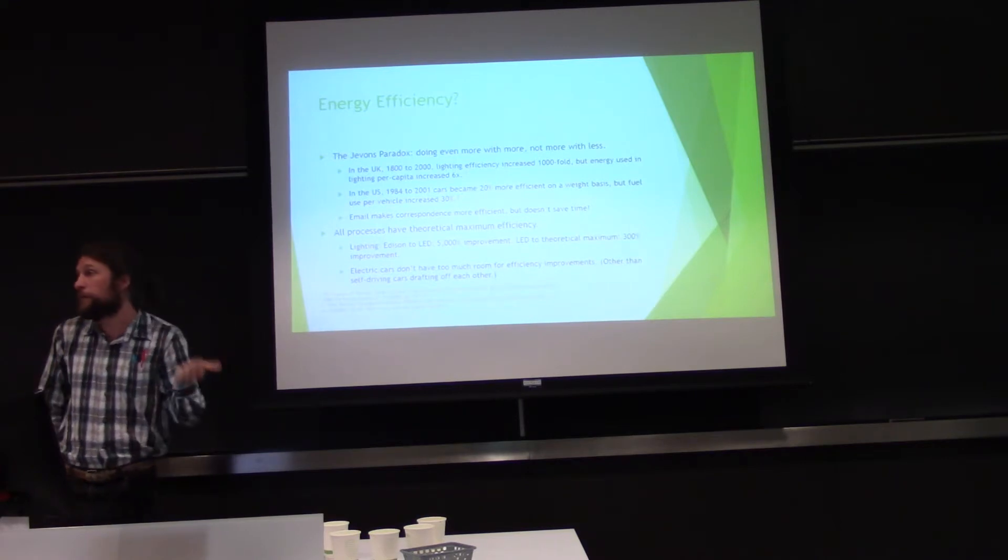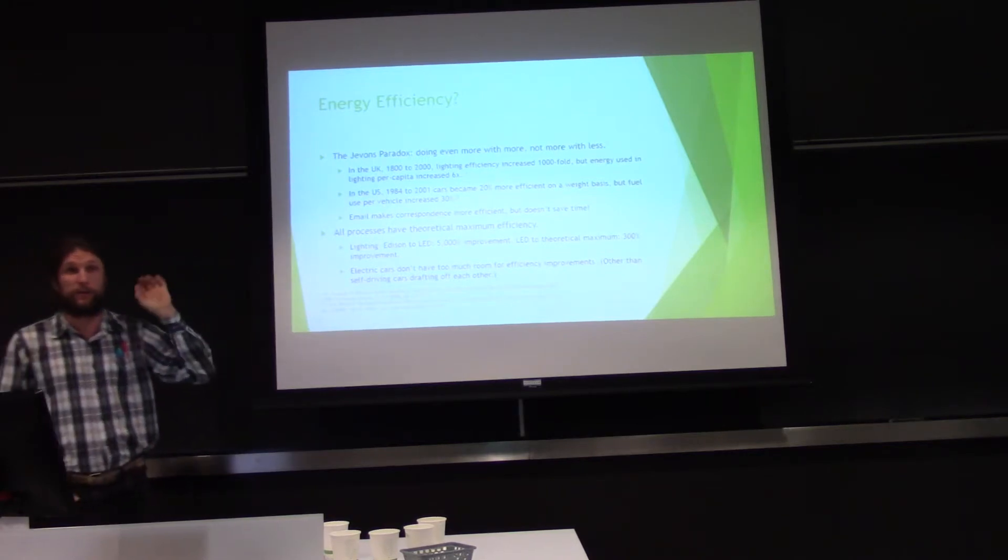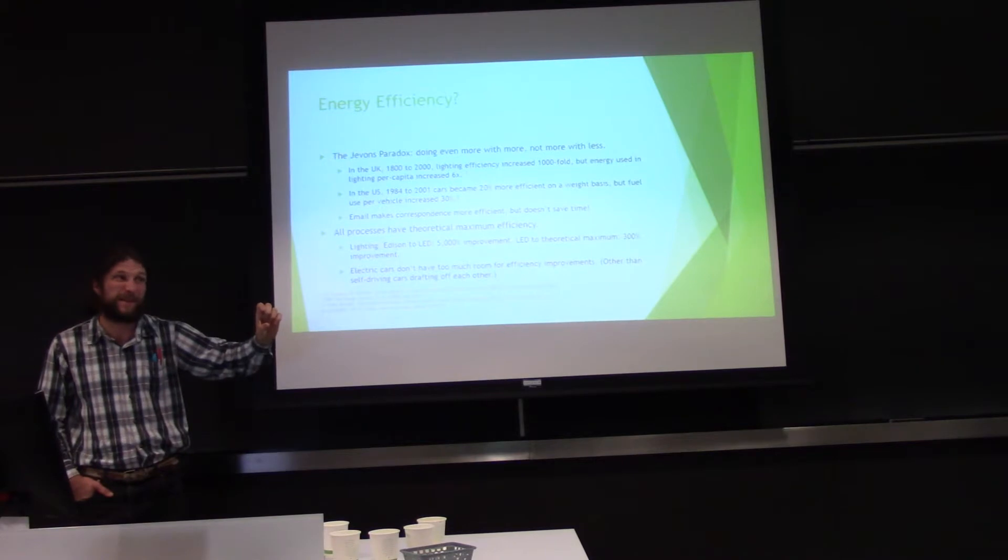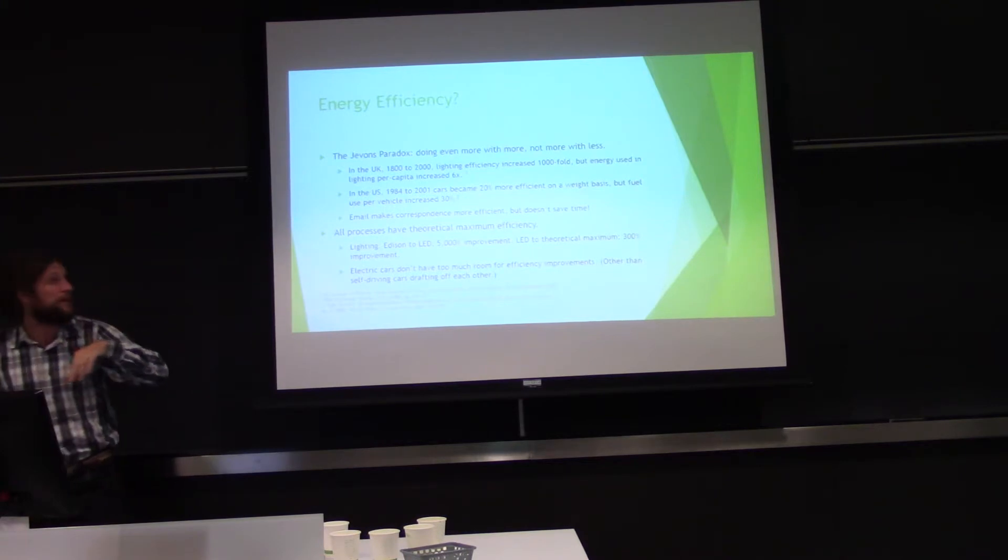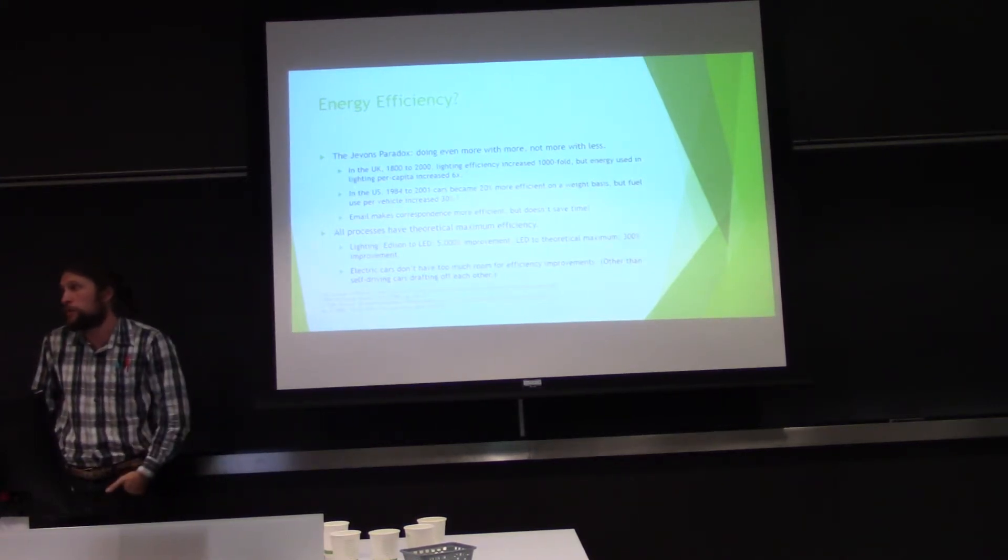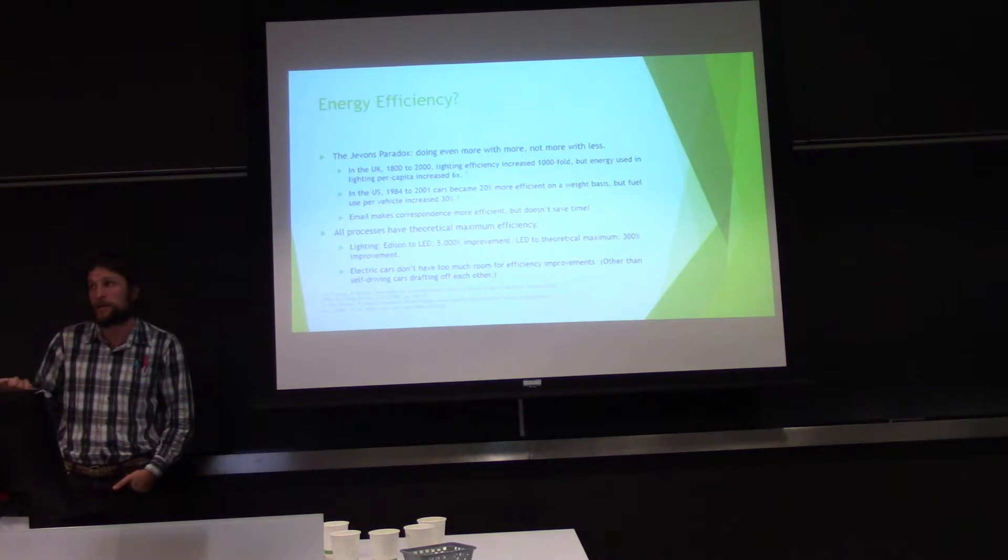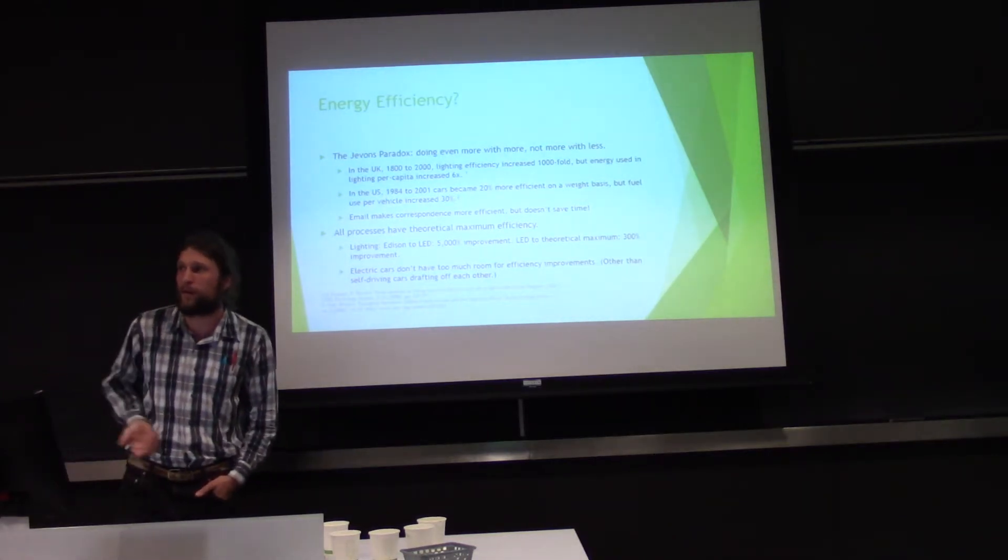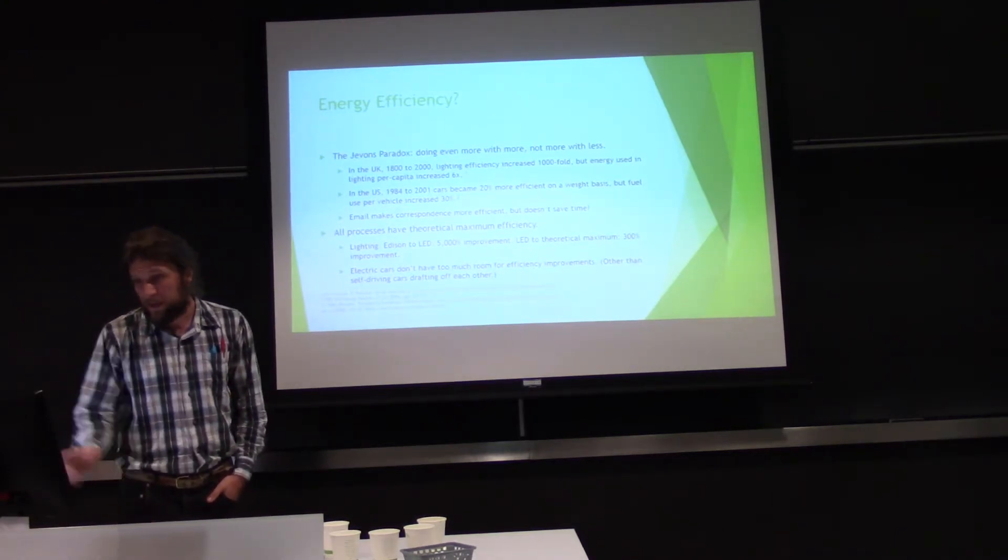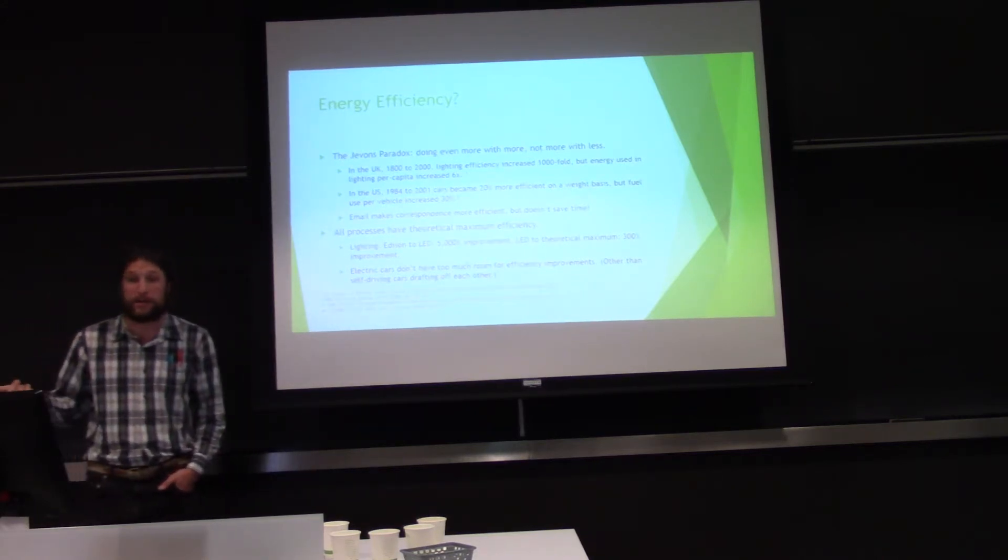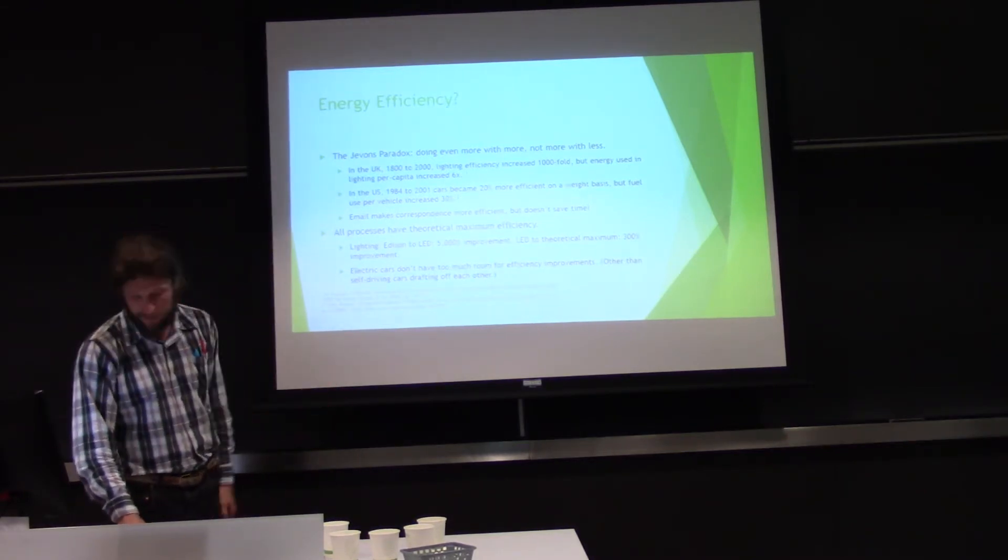And all processes have theoretical maximum efficiency. So, light is a photon, and a photon is energy. And you can be 100% efficient at that, and we're, at current technologies, almost halfway there, compared to the 5,000% improvement from Edison to an LED. Electric cars, their motors are 90% efficient. And they also, most of the remaining efficiencies are in aerodynamics. You could make a car that's shaped like a trout, and you could get, like, triple the energy efficiency of an electric car, but people don't want to be in a fish car. And this is actually explained by the Maximum Empower Principle, because you can do more with more. And that's selected for in these evolutionary systems.